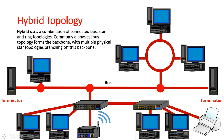I hope these five questions have given you a good understanding of the different topologies used as part of the communication systems unit — the ring, star, bus, wireless, and hybrid topologies. I hope this all made sense and you got five out of five.